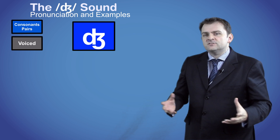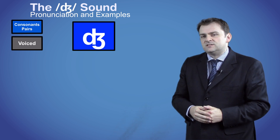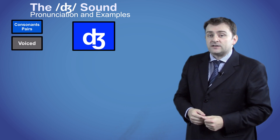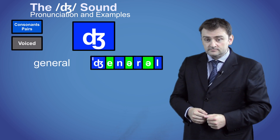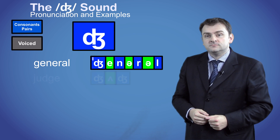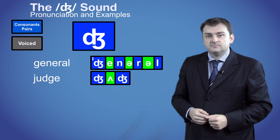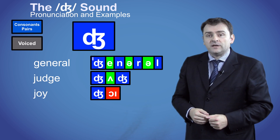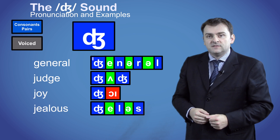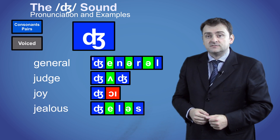Here are some example words that begin with the J sound: General, Judge, Joy, and Jealous.